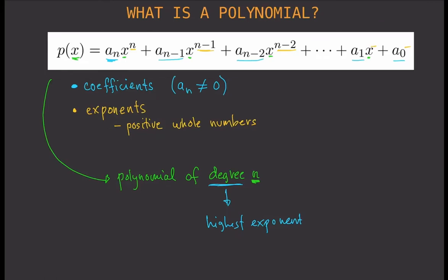Your highest exponent is n, and if you set a-sub-n equal to zero, then this will not be a polynomial of degree n anymore, because that term disappears and your highest degree would be n-minus-1. We want our polynomial to be of degree n. Also, the coefficients have to be real numbers — you don't want complex numbers as your coefficients. That's how you determine whether an expression is a polynomial or not.